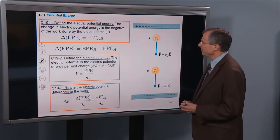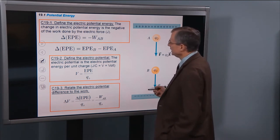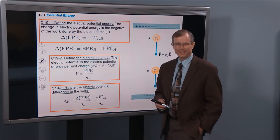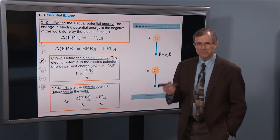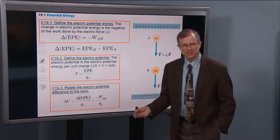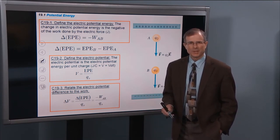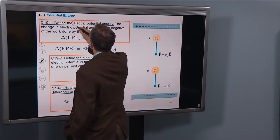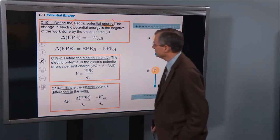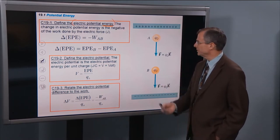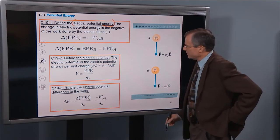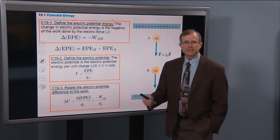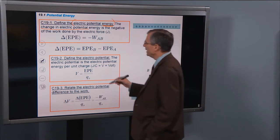Let's define the electric potential energy first. It's defined in terms of its change in electric potential energy. It actually never matters what the electric potential energy itself is — all that ever matters is what the change in electric potential energy is. This is the one with the word energy attached to it, and it's like gravitational potential energy. The change in electric potential energy is defined as the negative of the work done by the electric force.